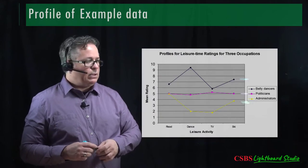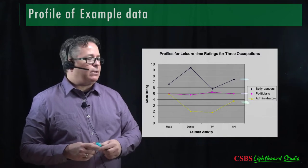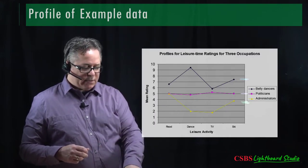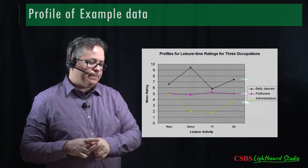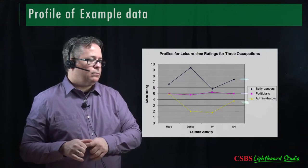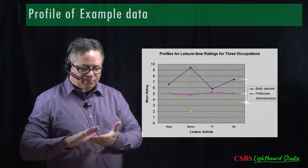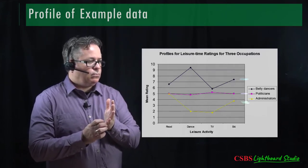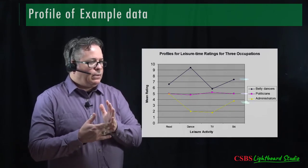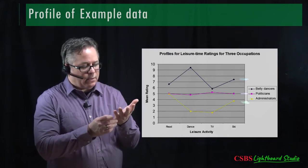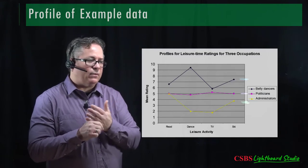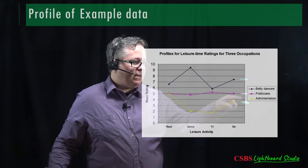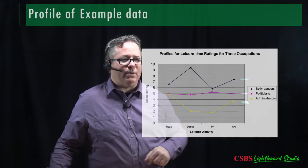Lucas, what other tests might you reject? The lines don't have the same pattern — each of the three groups has a different pattern. The blue group goes up, down, and up; the pink group is roughly flat; the yellow group goes down, stays the same, then comes back up. So their profiles are not parallel — it's likely there's going to be an interaction.